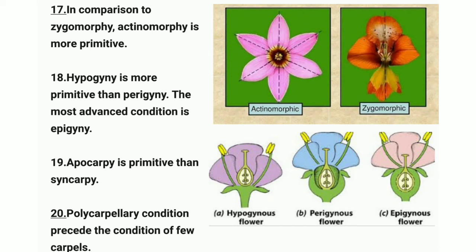Point seventeen: in comparison to zygomorphy, actinomorphy is more primitive. Zygomorphy refers to flowers that divide into two equal parts in only one plane, while actinomorphy refers to flowers that divide into two equal parts along any diameter, as seen in the image on screen.